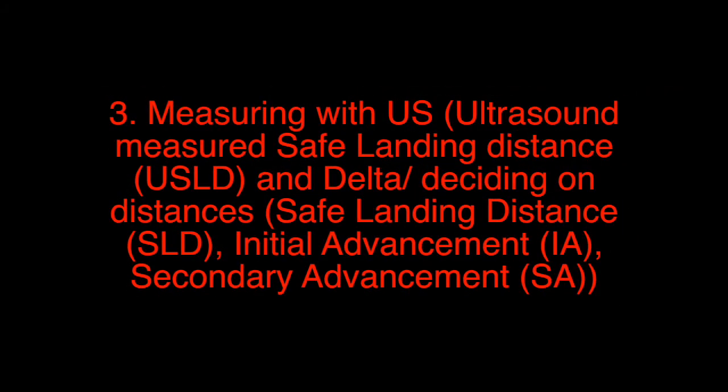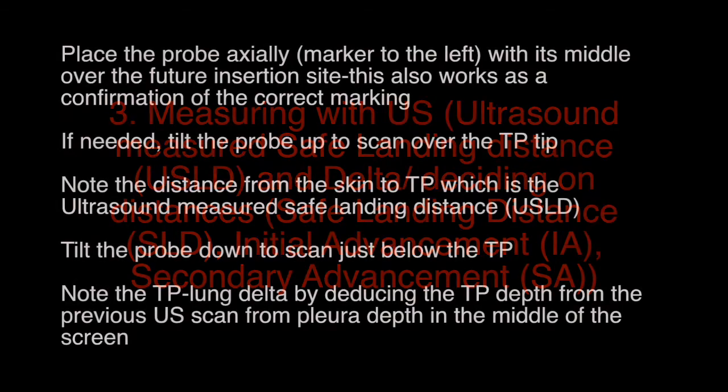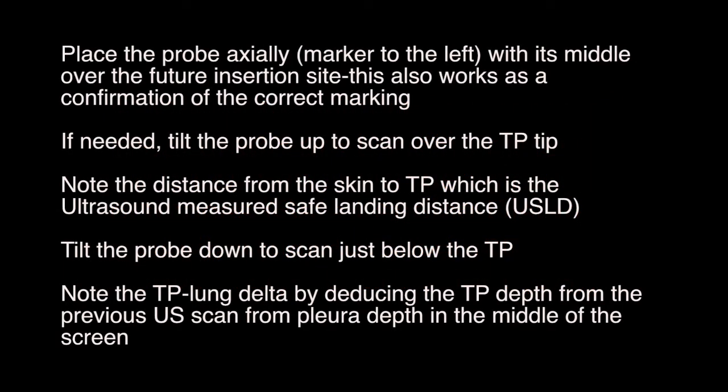Step 3: Measuring with ultrasound and deciding on distances. Place the probe axially with the marker to the left, with its middle over the future insertion site — this also serves as a confirmation of correct marking. If needed, tilt the probe up to scan over the TP tip and note the distance from the skin to the TP, which is the ultrasound-measured safe landing distance. Tilt the probe down to scan just below the TP, and note the TP lung delta by deducting the TP depth from the pleura depth in the middle of the screen.